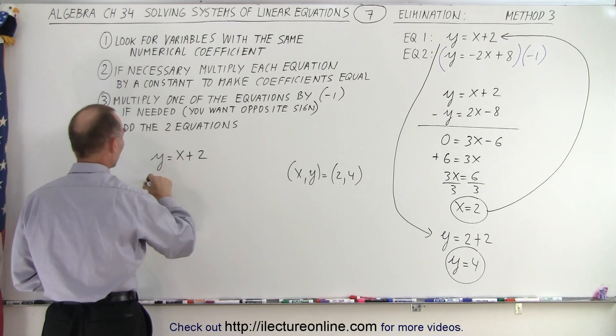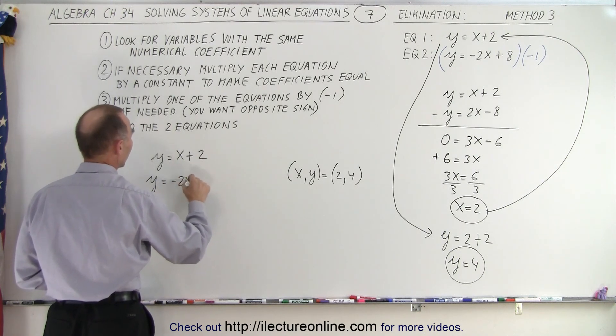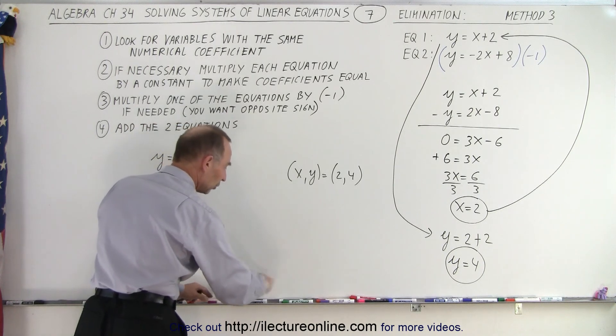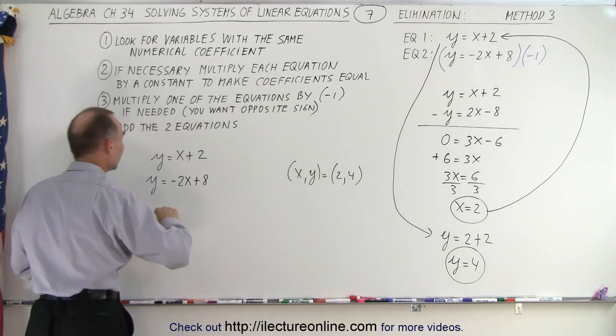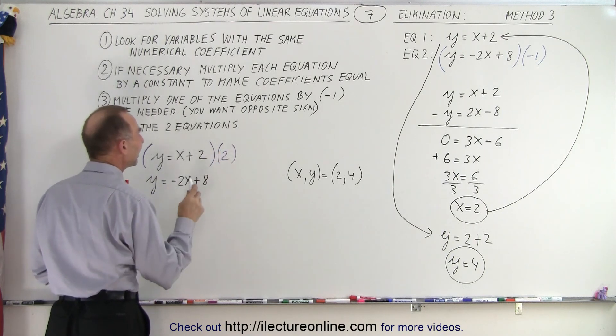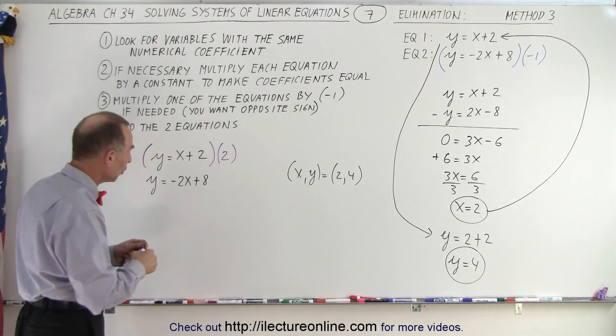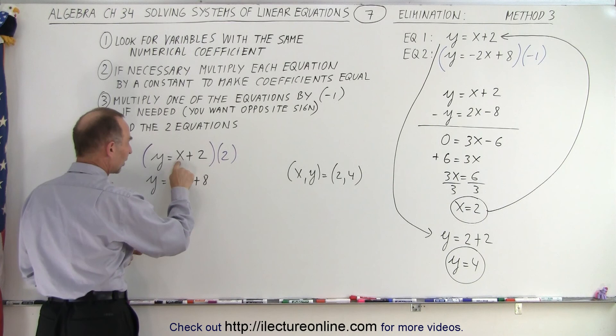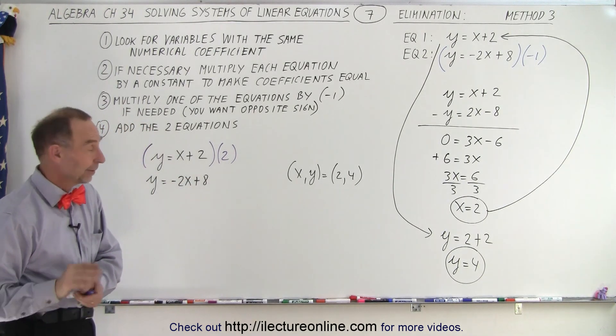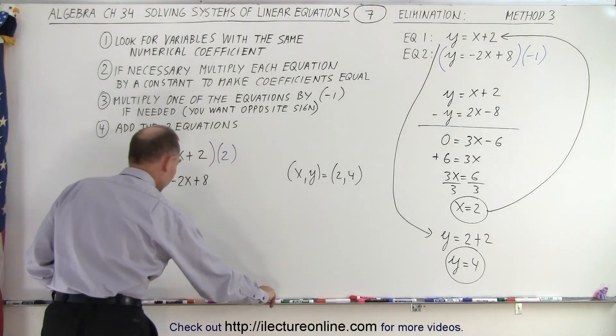So what I'm going to do here is I'm going to multiply the first equation by a 2. Not a negative 2, but a 2. Notice if I do that, I get a 2x here and a negative 2x there. And when I then add the two equations, the x's are eliminated. So let's try that.